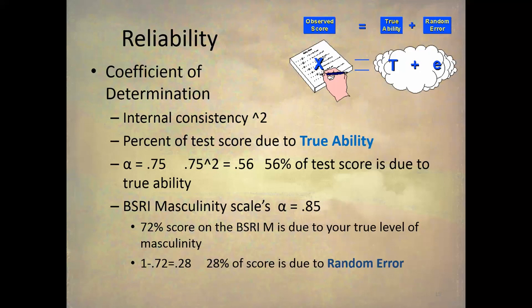Getting back to why 0.71 is the bare minimum: because 0.71 times 0.71 equals 0.50, which means half the test score is error. We'll talk about error and why that's bad in future lectures about statistical conclusion validity.